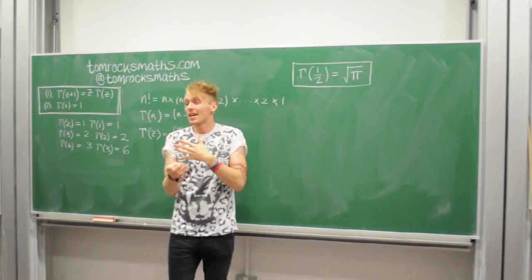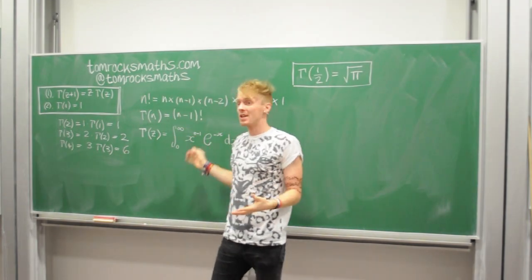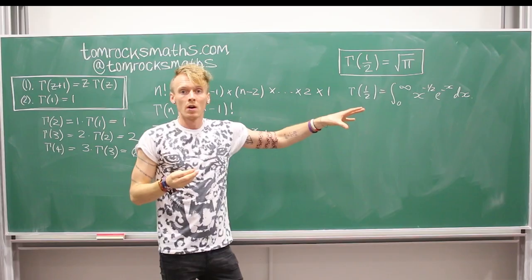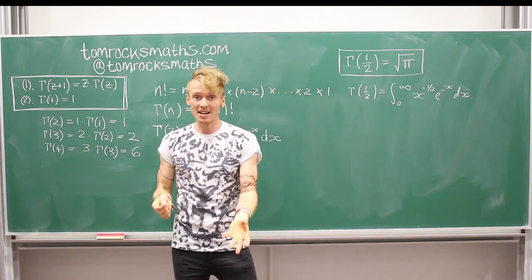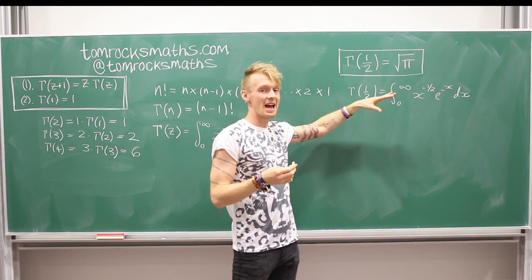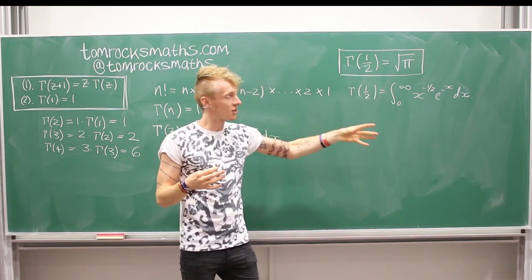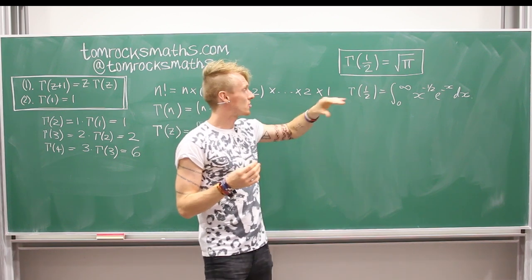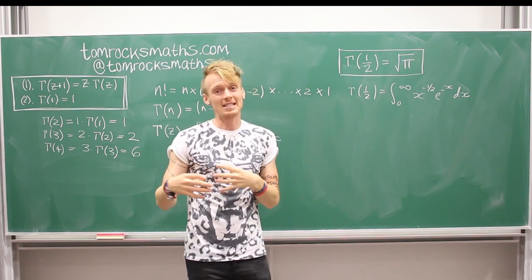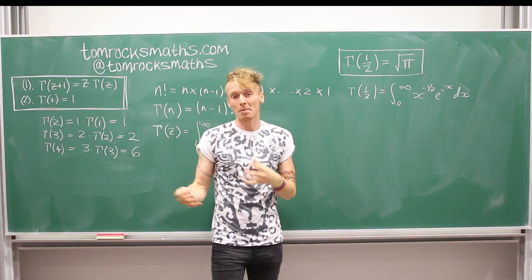And so we're going to have to use the integral definition, because, of course, a half is not a positive integer. The answer of gamma of a half is simply just the result of this integral. Now this is not, at first glance, not an obvious integral to calculate. And to be able to do it, what we actually have to do is to look at a different branch of probability. And in particular,